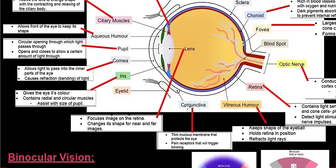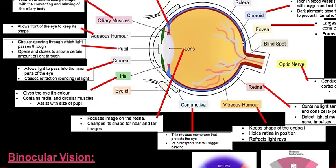The first one we'll look at is the conjunctiva, which sits just in front of the cornea. It is a very thin mucous membrane that protects the eye and has pain receptors in it that trigger the reflex of blinking. For example, if you're riding a bicycle on a dirt road and dust particles reach your eye, touching that membrane triggers the pain receptors, which trigger the eyelids to blink and get rid of the debris.